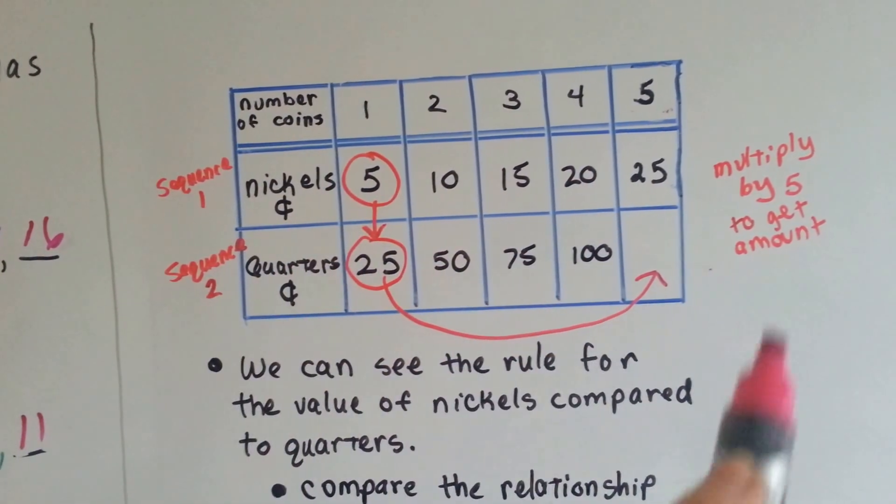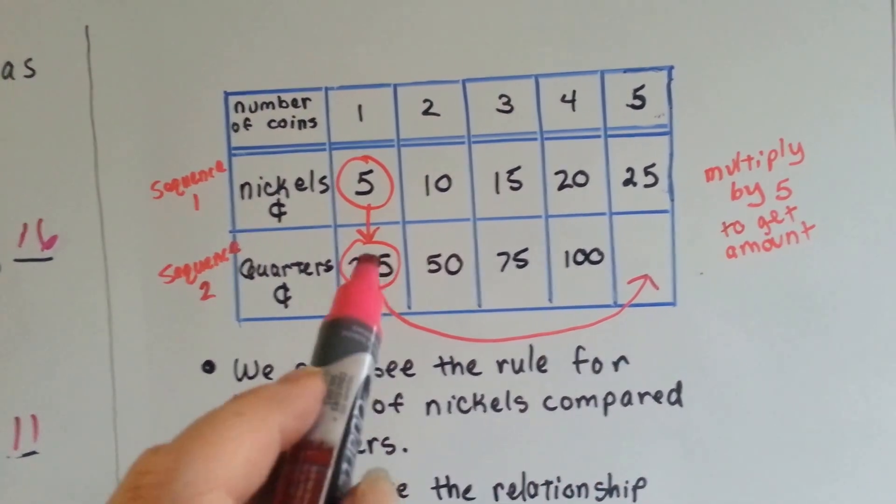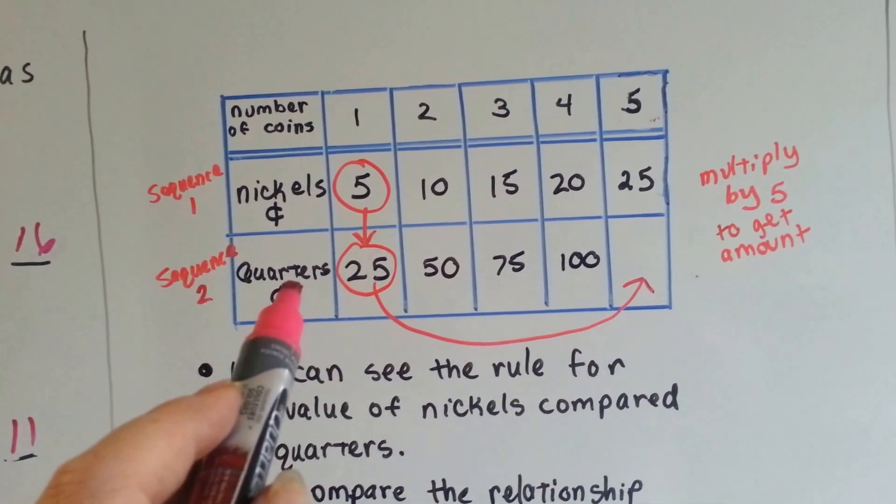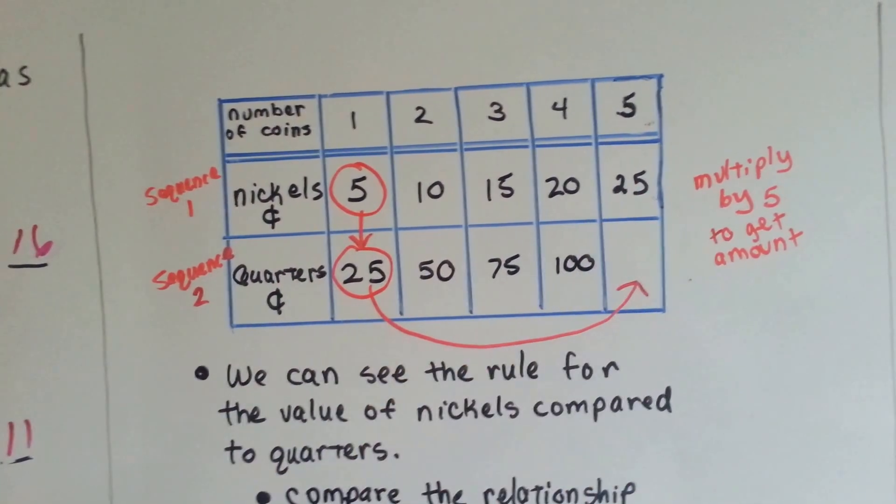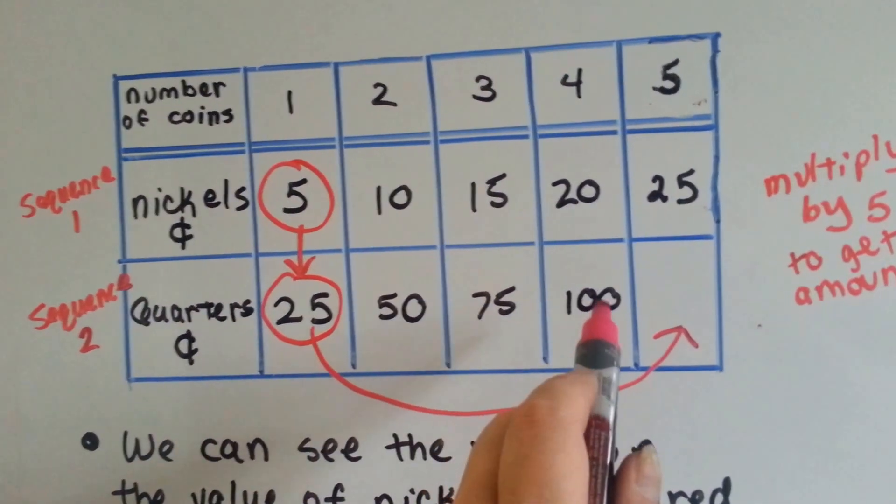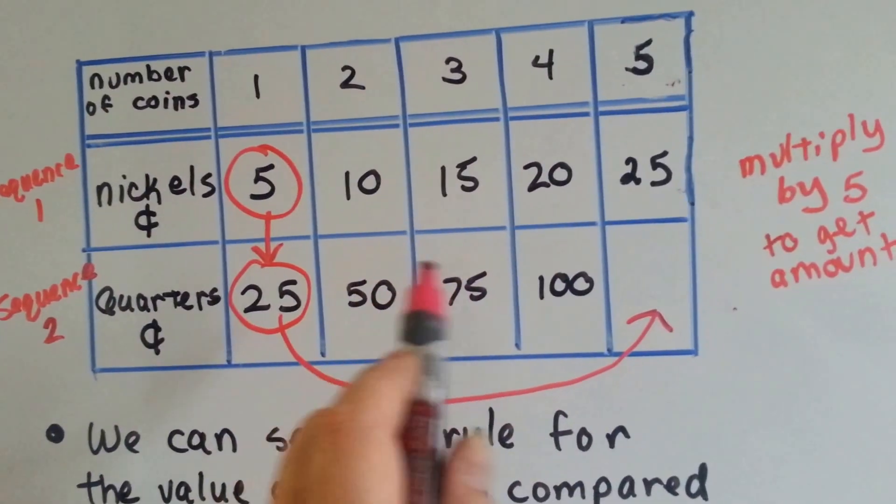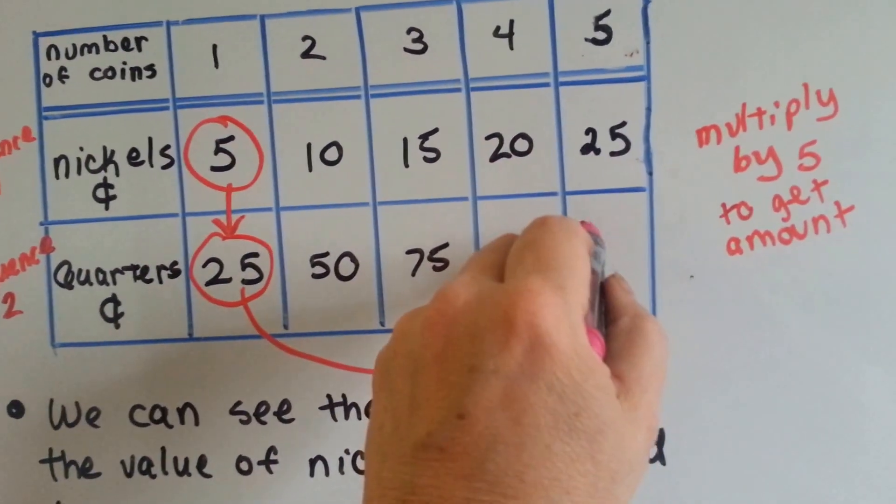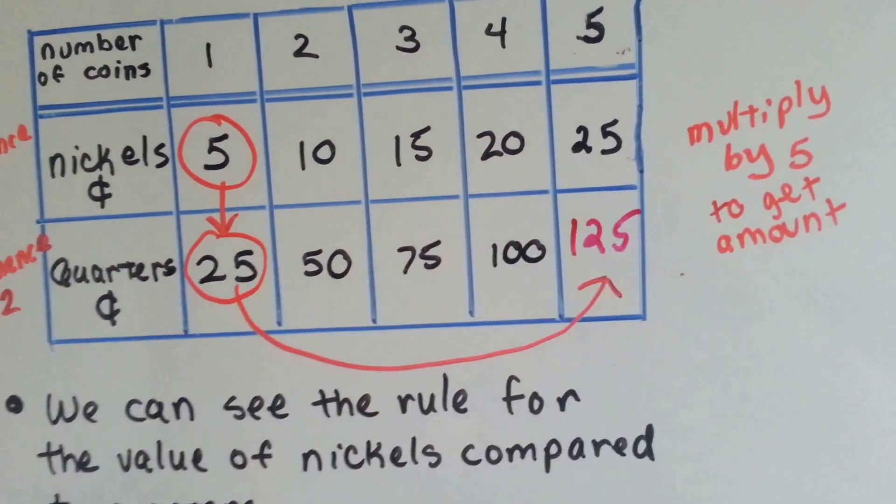5 to 25? They're multiplying by 5 to get the bottom amount for sequence 2. So all we'd have to do is multiply 25 by 5, and we'd get the missing number here. We could also go up by 25 here, because it keeps going up by 25. So if you say 125 should go here, you're right.